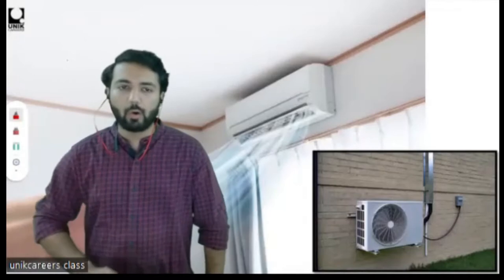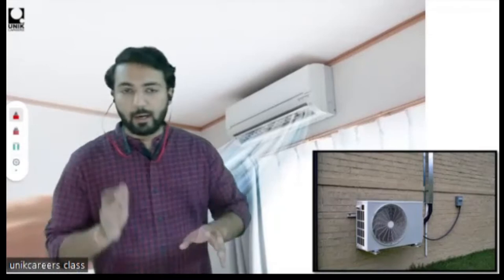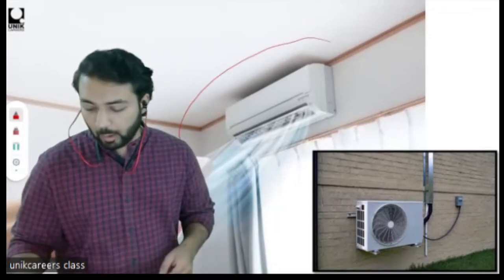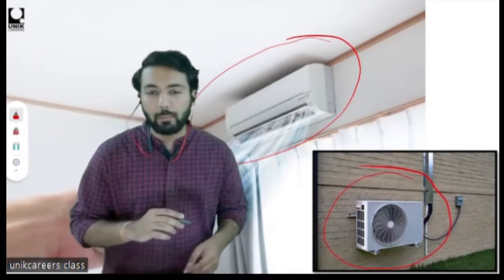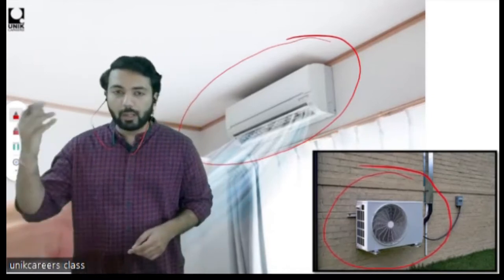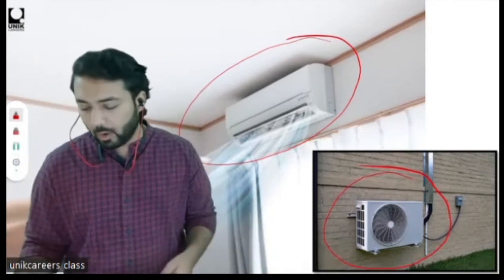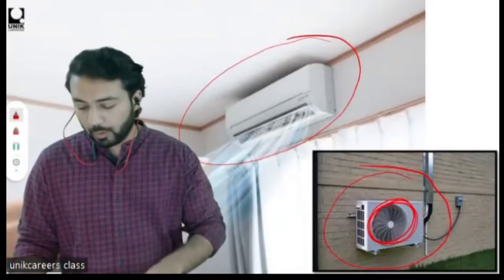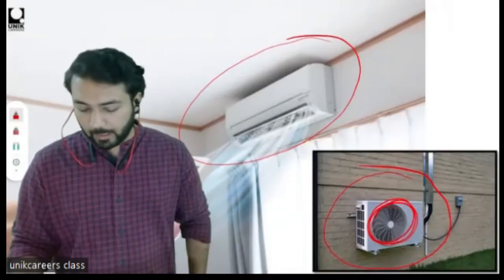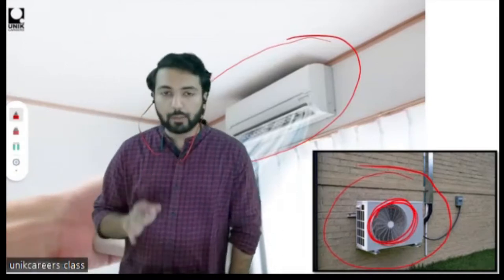The second type is a split AC. As shown in this image, all of you have probably seen a split AC in your home. In a split AC there are two units: the first is an indoor unit and the second is an outdoor unit, which is usually placed in the balcony or on the terrace. It needs an exterior area because heat will come out from the exhaust.